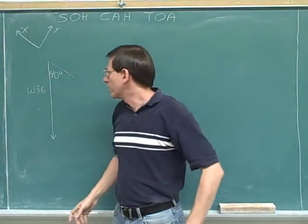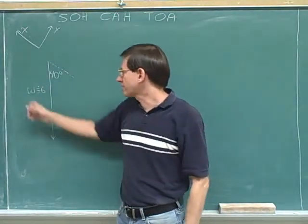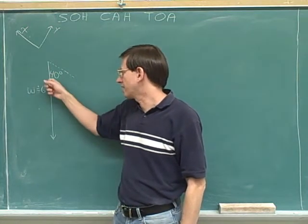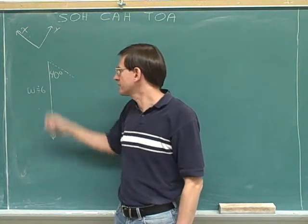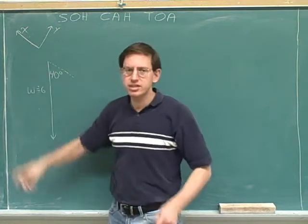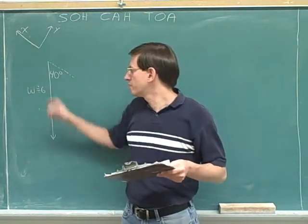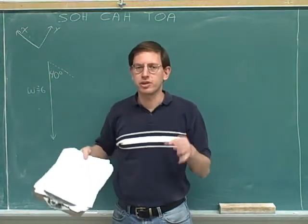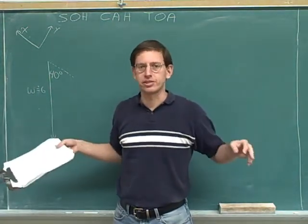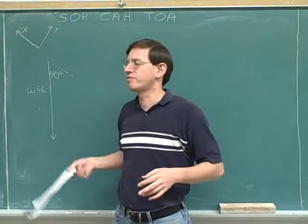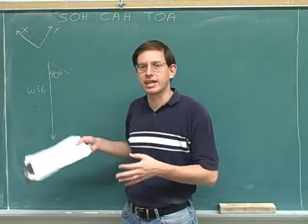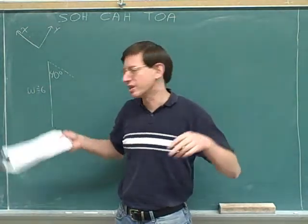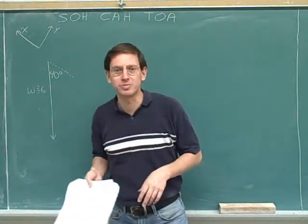Here's another problem. Our overall vector is w, which has a magnitude of 6. It's got an angle of 40 degrees. Here are our axes. Please try to break this vector into components. Remember, that's also called resolving a vector into components. We want to resolve this vector into x and y components — the same type of problem we've been doing lots of examples of.